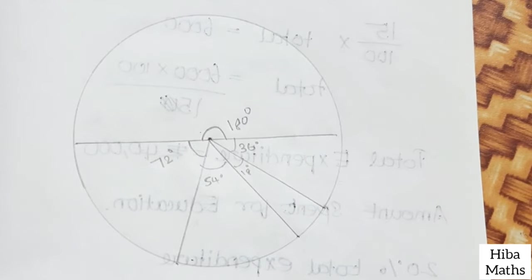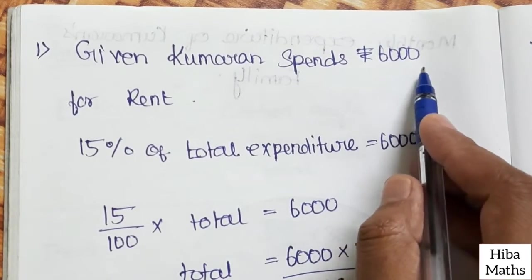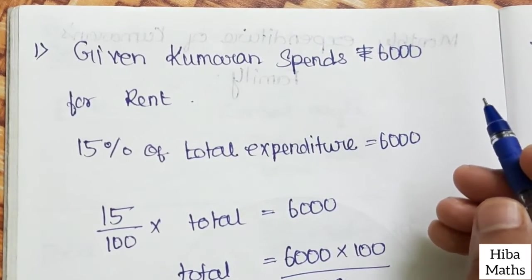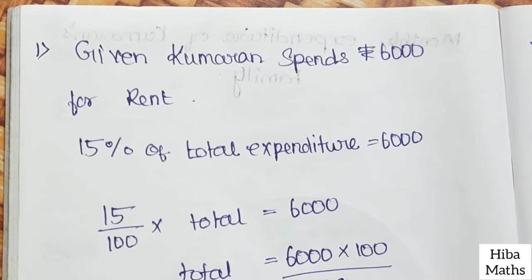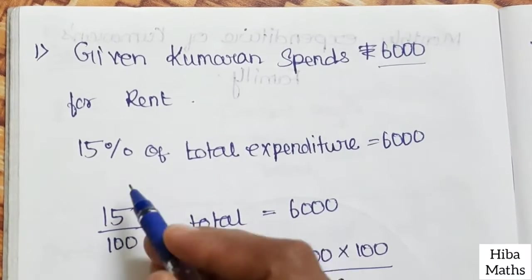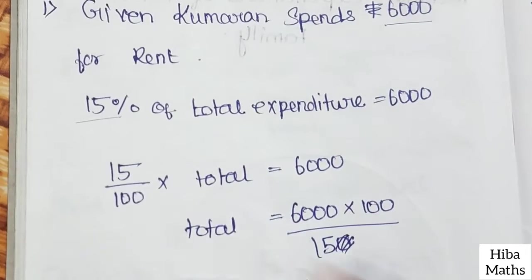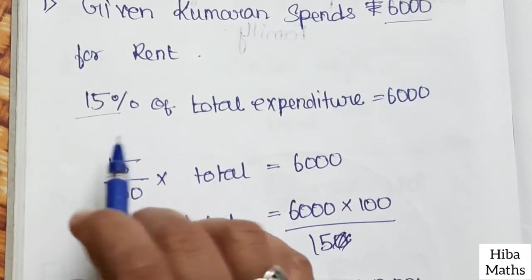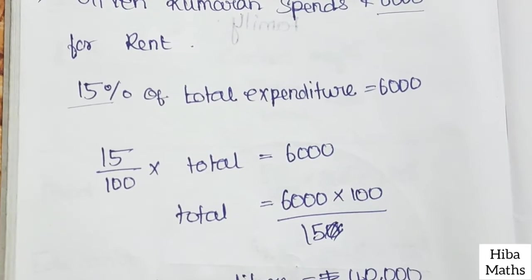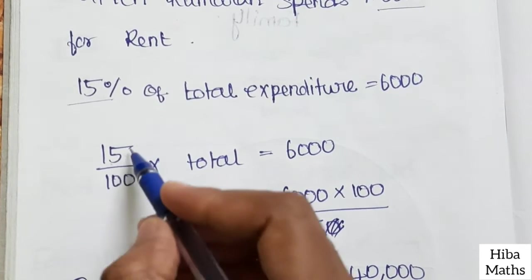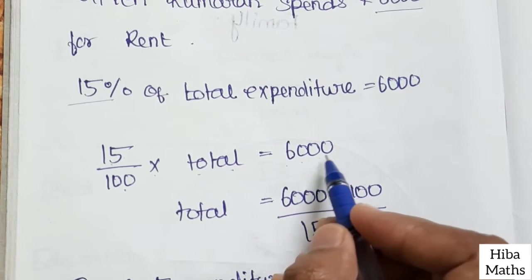There are three questions. The first question: if Kumarin pays Rs. 6,000 for rent, find the amount spent for education. The percentage of rent is 15%, so 15% of total expenditure equals 6,000. That means 15 divided by 100 into total amount equals 6,000.